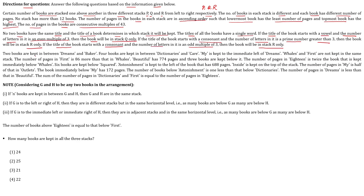These are the conditions for keeping a book in a stack. Two books are kept between Dreams and Bakers. Four books are kept between Dictionaries and Care. My book is kept to the immediate left of Dreams. Wells and First are not kept in the same stack. The number of pages in First is 86 more than that in Wells. Beautiful has 774 pages and three books are kept below it. The number of pages in 18 is twice the book that is kept immediately below Wells.